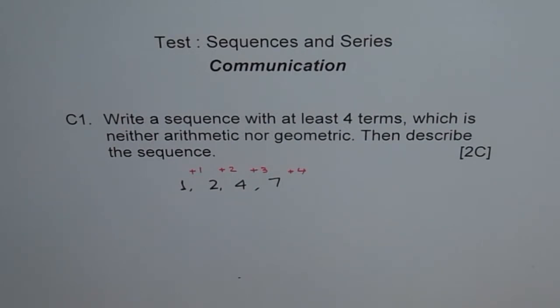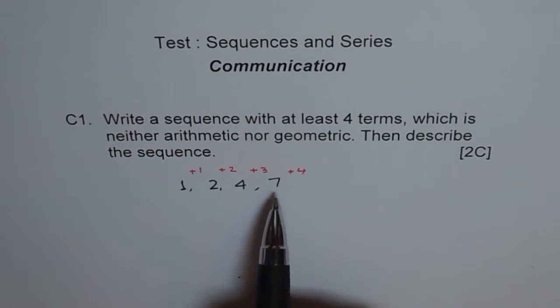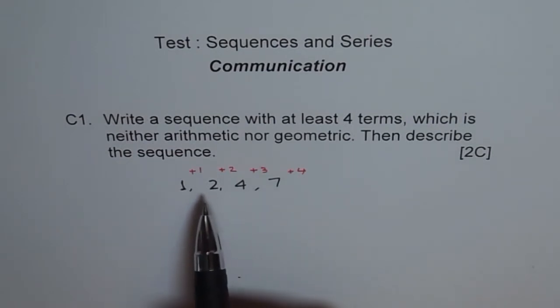Well, this is not an arithmetic sequence since we are not adding the same number all the time. As you can see, difference between two and one is one. Difference between four and two is two. So difference is not constant. If the difference between successive terms or consecutive terms is not same, then it is not an arithmetic sequence.